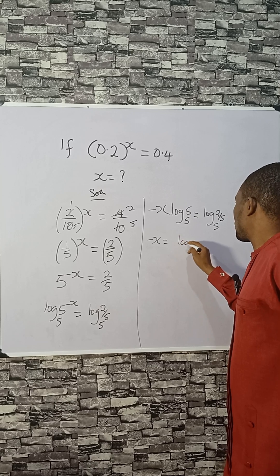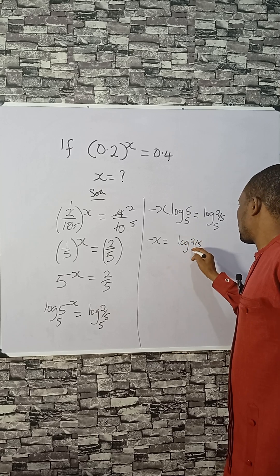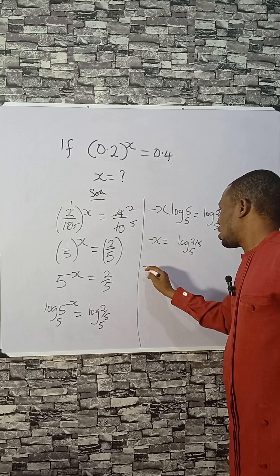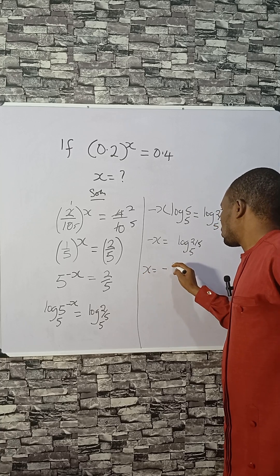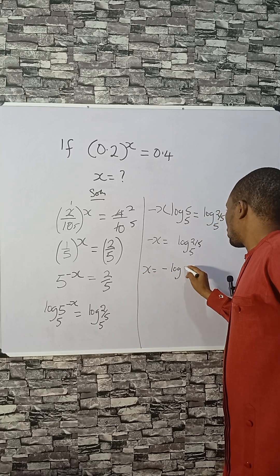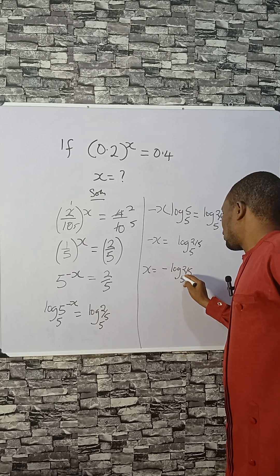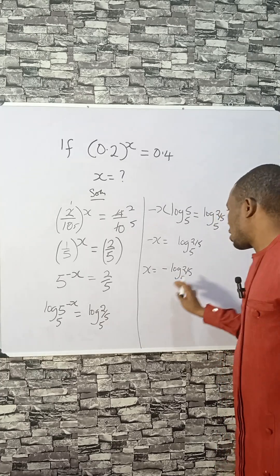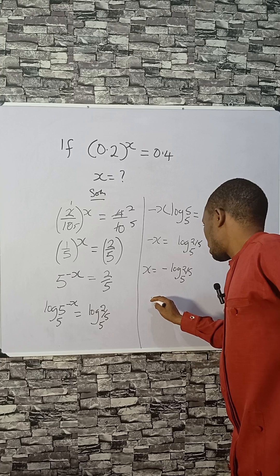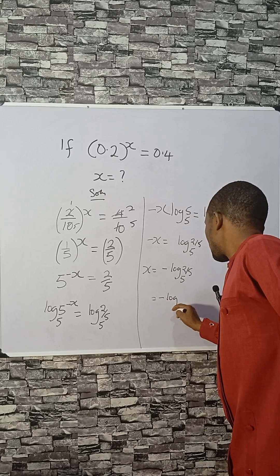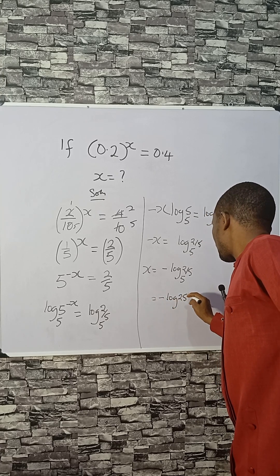This is the answer: x equals minus log 2 divided by 5, base 5. If you want the numerical value of this, you can convert it to base 10, and that will be minus log 2 over 5.